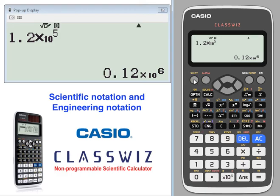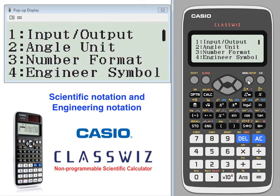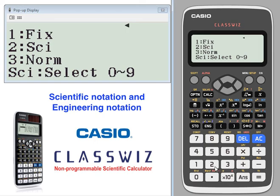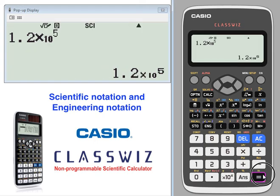Another place you can set this is in the setup under number. Under number format, change it to scientific and you can select between zero and nine leading decimals. We'll go with two.